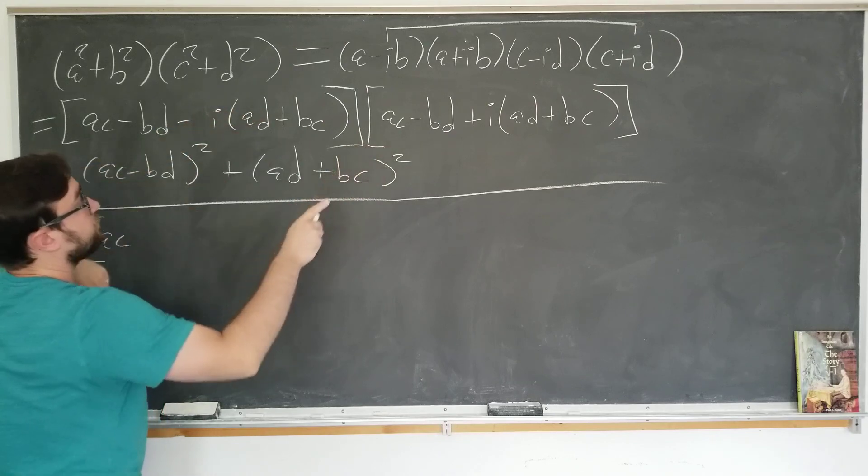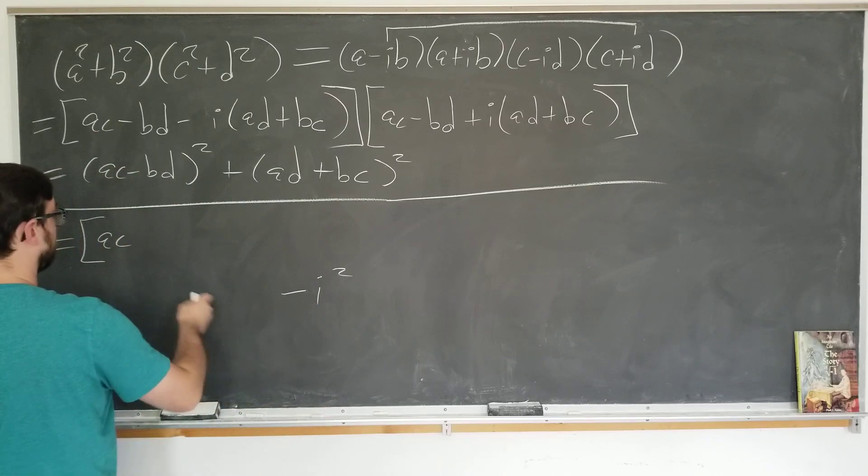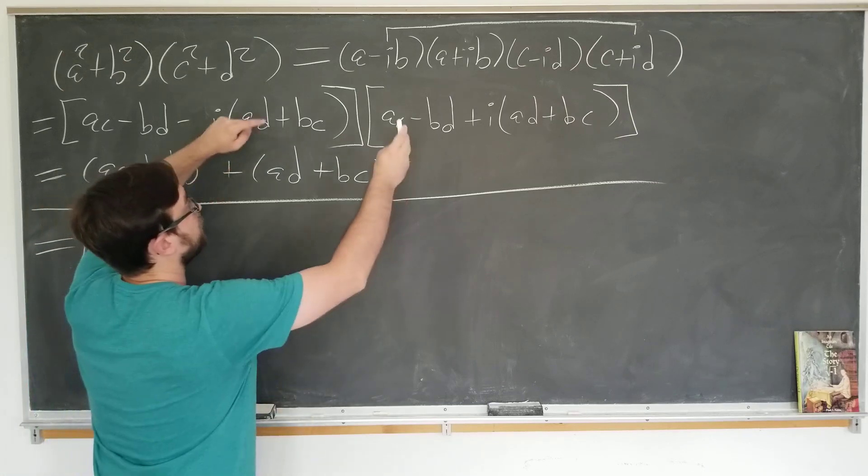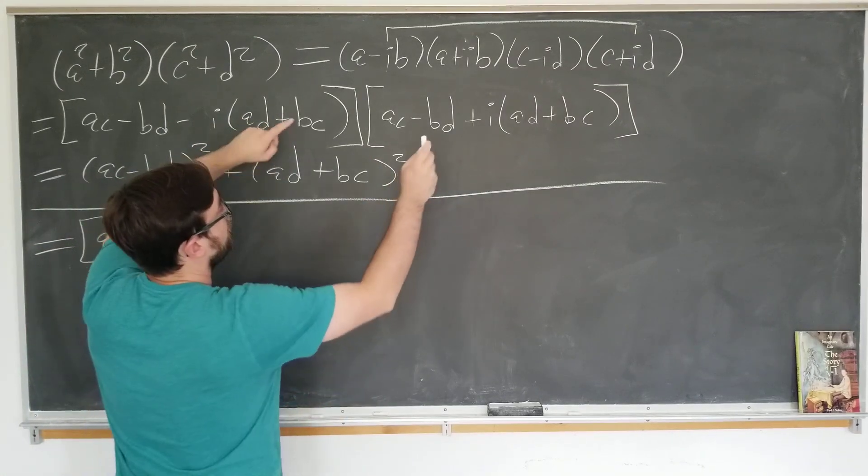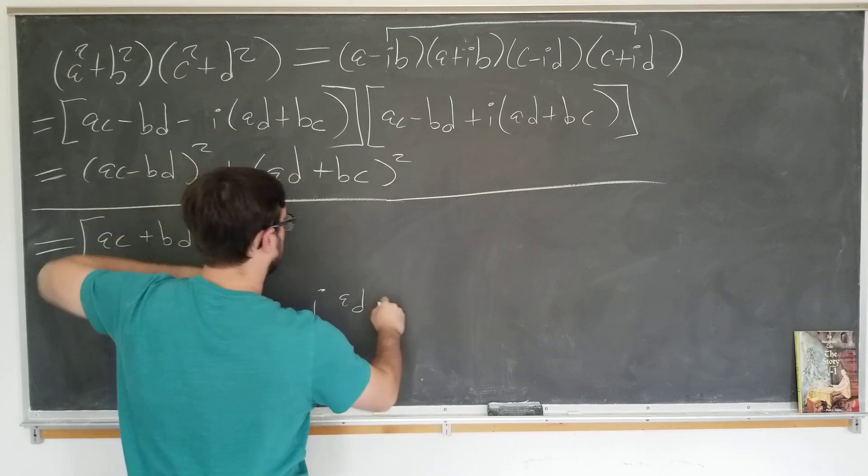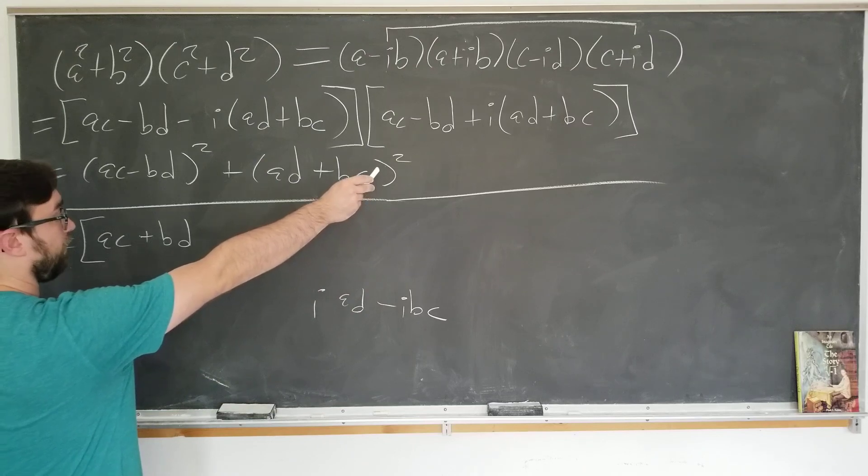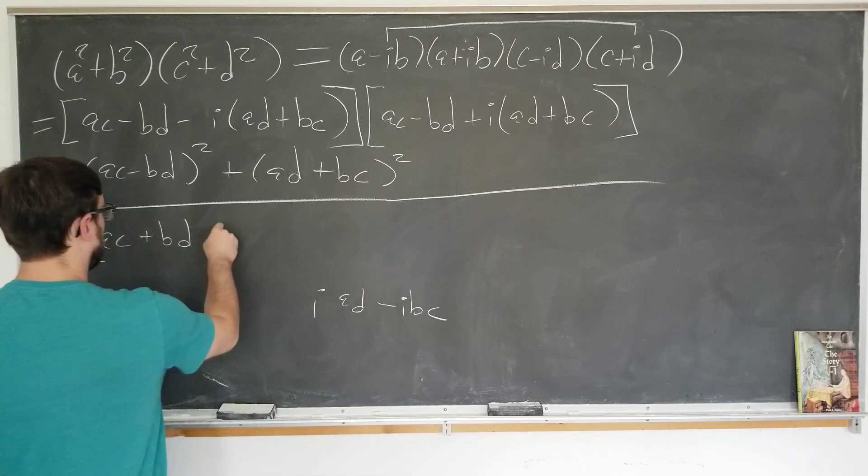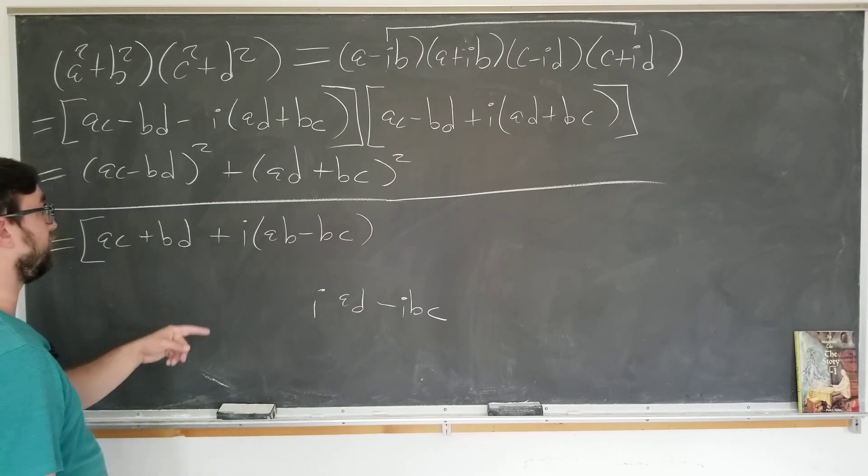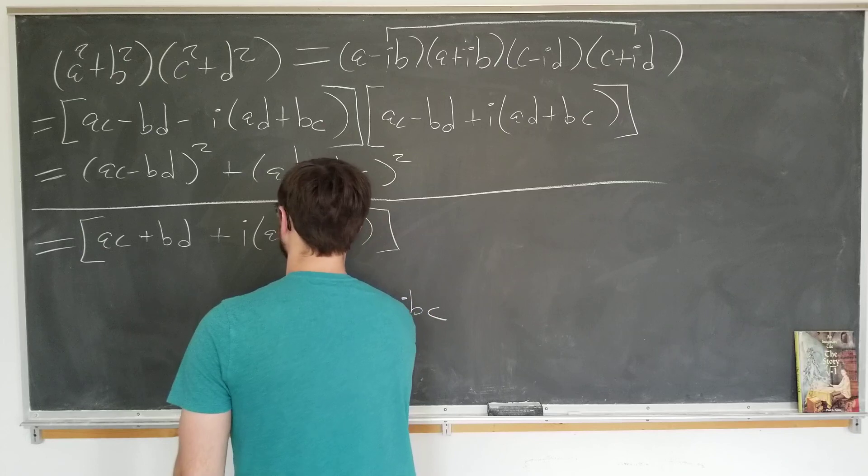This is also equal to we have AC. Last term is minus i squared BD. That becomes plus. And the imaginary term is iad minus bc. And we want to use the same format that we had over there. So it can be plus i ad minus bc. I'm choosing the convention of putting the a's and the d's first. This is our first term.